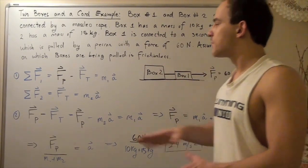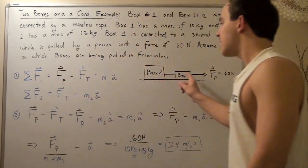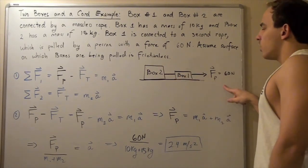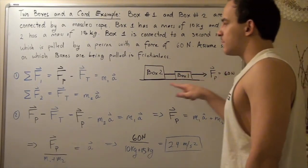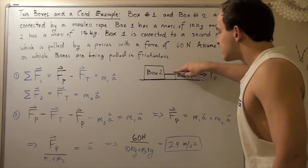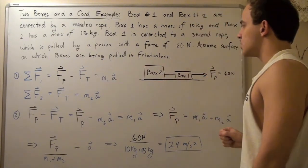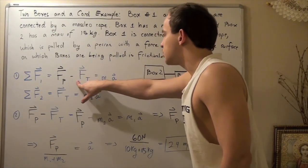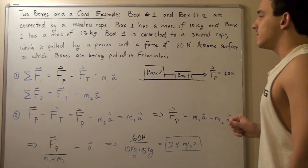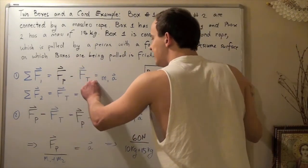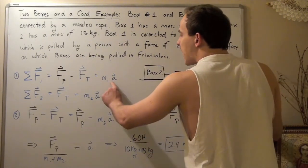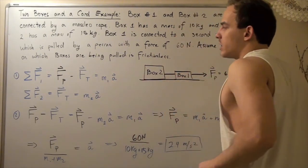Let's begin with box number 1. The net forces acting on box number 1: one force is the pulling force going in the positive direction, so F subscript P is positive. Then we subtract the tension in the rope, which acts in the opposite direction, so minus F subscript T. We know F subscript P is 60 Newtons, but the tension is unknown. This equals, according to the second law of motion, the mass of box 1 multiplied by the acceleration of box 1.